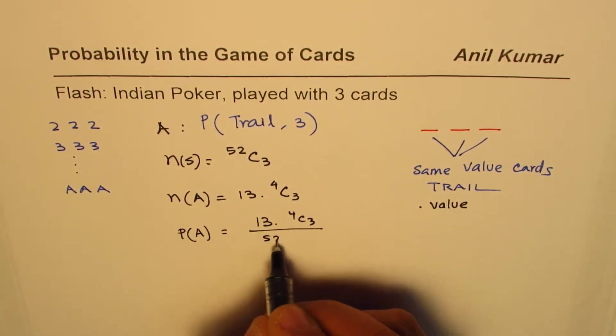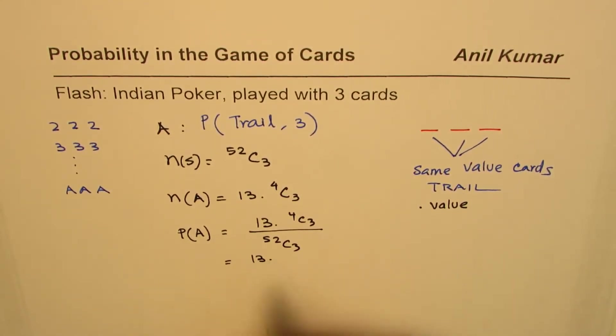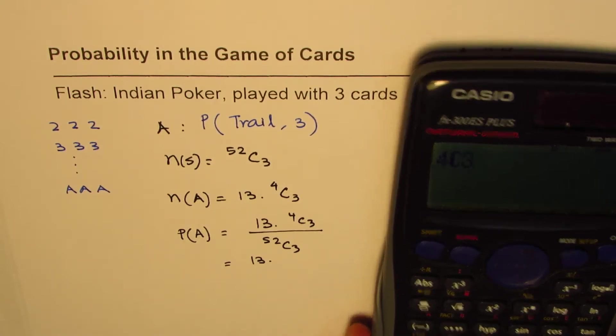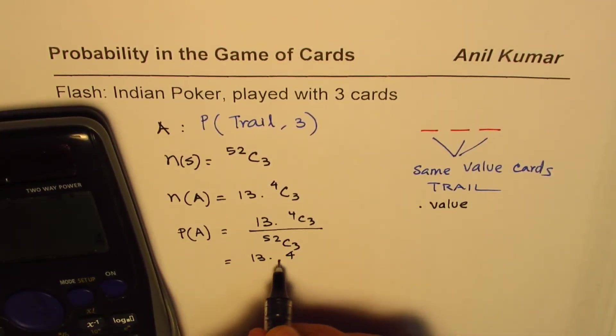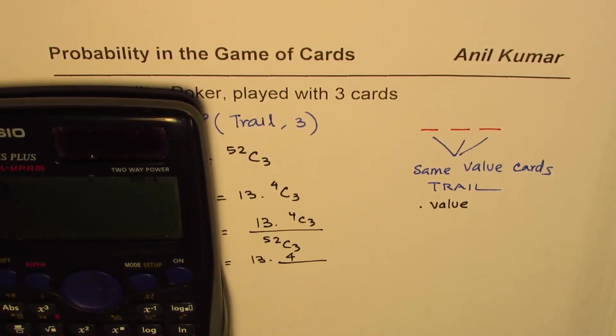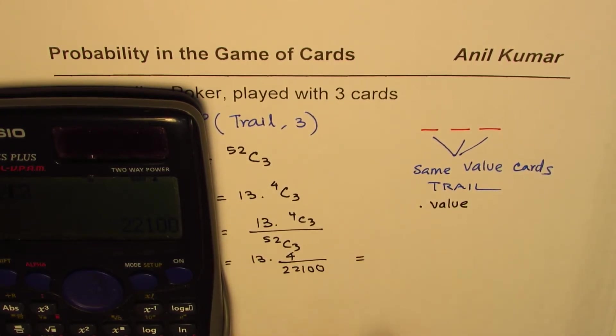Let's calculate this using calculator. 4C3 equals to four. The denominator is 52C3, that is 22,100. Let's calculate the value now: 13 times 4 divided by 22,100.